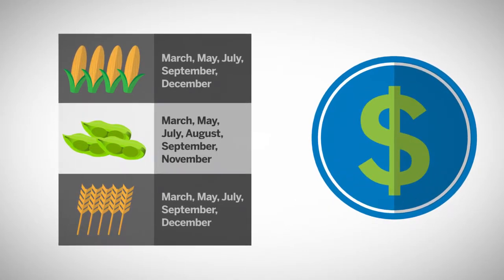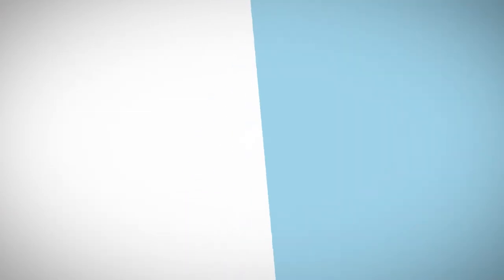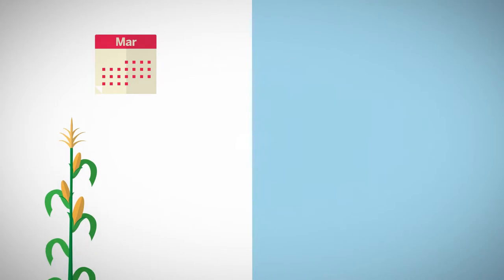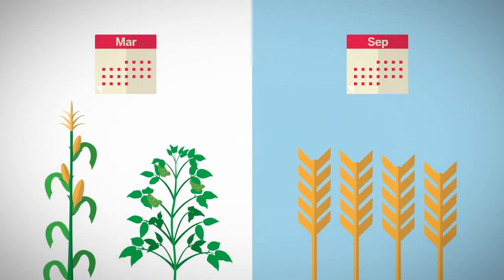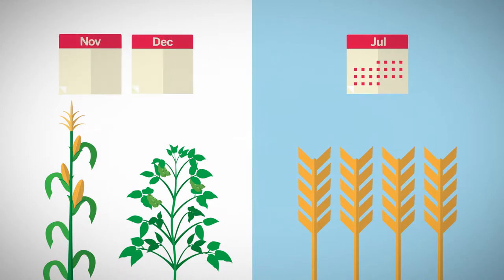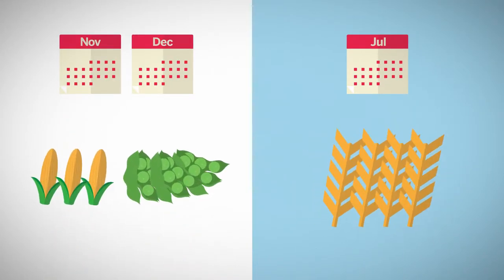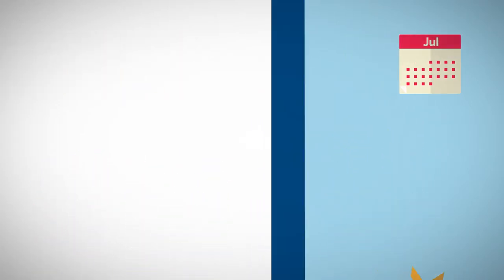These trading months are also indicative of the source of supply at any particular time. During the planting months — spring for corn and soybean and fall for winter wheat — the grain available for sale or purchase by end users is from the crops harvested during the previous harvest season: the old crop. During the harvest months, typically July for winter wheat and November and December for corn and soybeans, the newly harvested crop comes to market and supply is higher, hence the new crop.